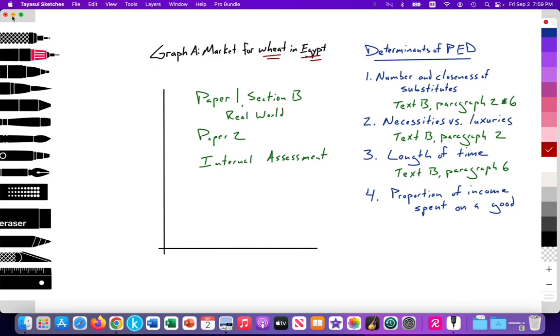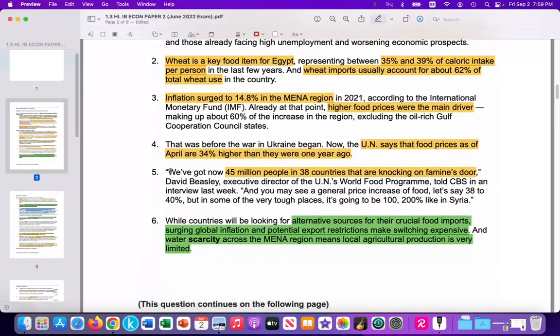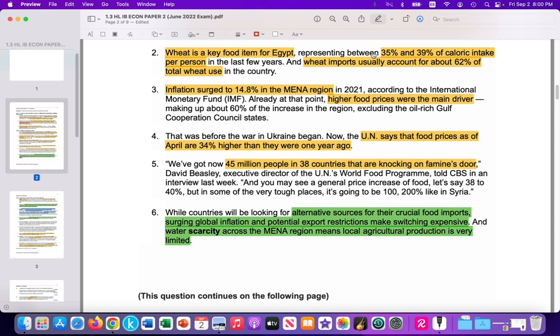Some of those factors include number and closeness of substitutes. And text B, paragraphs 2 and 6, highlights that there's no close substitute, that wheat is really the dominant food intake for the Egyptian population. Wheat is a key food item in Egypt, 35 to 40 percent of the caloric intake per person. Very dependent on that particular type of cereal grain. And it might be difficult for them to switch over to corn or some other type of cereal grain because culturally, maybe their tastes and preferences is for this type of cereal grain. So I could use this type of quote here to support my reasoning for the PED being inelastic due to no close alternative for the Egyptian people.